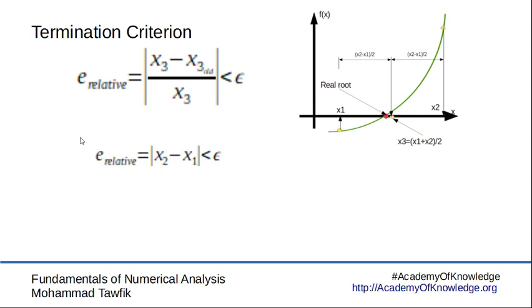That's why the relative error becomes the length of the interval, the distance between x2 and x1. If it's very small, then we are closing up on the solution. This becomes our relative error.